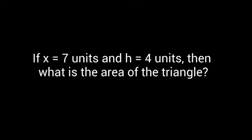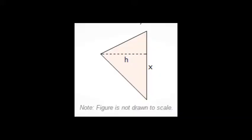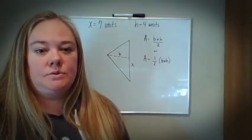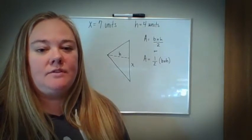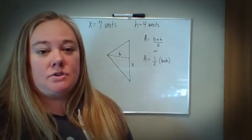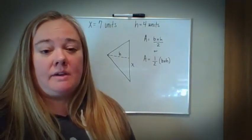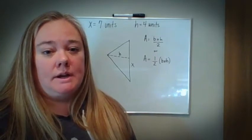If x equals 7 units and h equals 4 units, then what is the area of the triangle? When you're finding for the area of a triangle, the triangle is going to be half of the rectangle or half of a square.